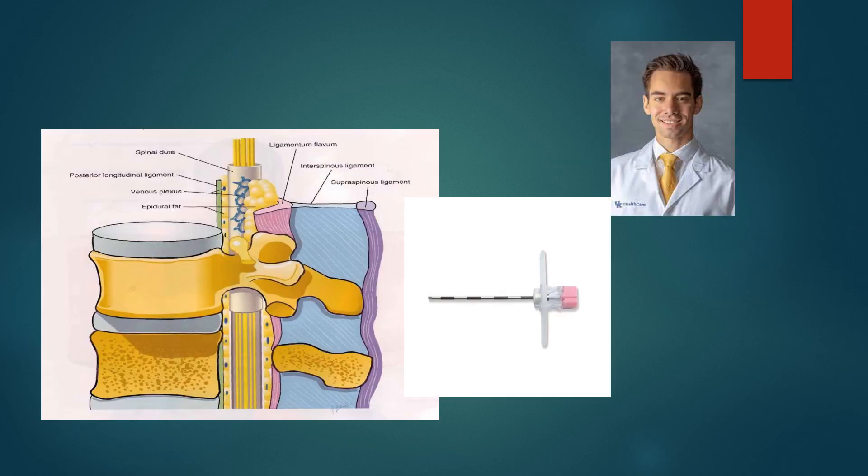When placing an epidural via the midline approach, the layers passed through are: skin, subcutaneous tissue, supraspinous ligament, interspinous ligament, and the ligamentum flavum. Via a paramedian approach, you do not pass through the supraspinous ligament or the interspinous ligament.